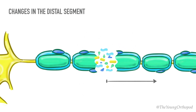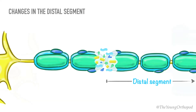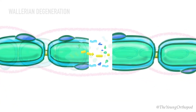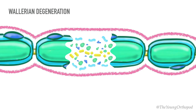The distal portion of the axon, which is disconnected from the cell body, undergoes granular disintegration of the cytoskeleton and axoplasm over several days to weeks. This process of degeneration distal to the point of injury is called secondary or Wallerian degeneration, which begins hours after injury.